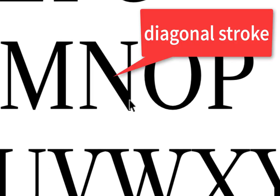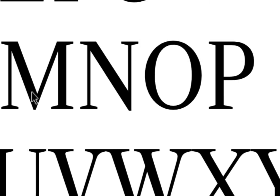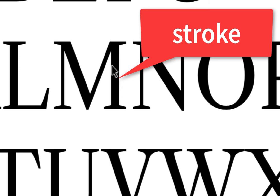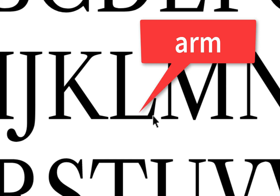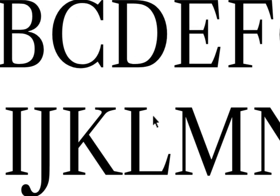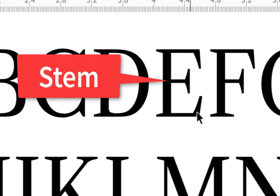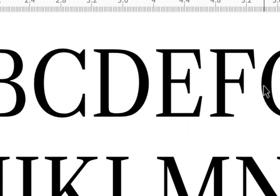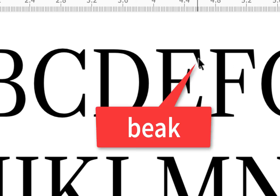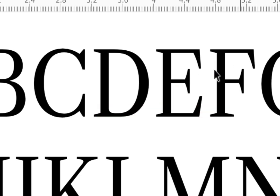Some letters have what I'd call a cross stroke rather than a clear stem. The 'x' has strokes I'd call primary and secondary. The 'l' looks like it has a stem with an arm coming out the bottom. The 'e' has a stem with three arms coming out. The 'f' has two arms coming out, and while we're talking about those, they also have beaks — those little things sticking down from the arms.